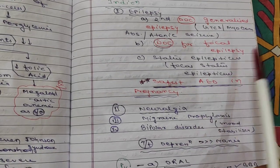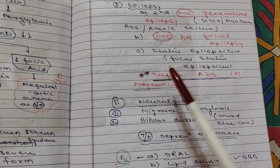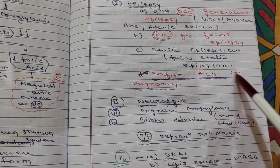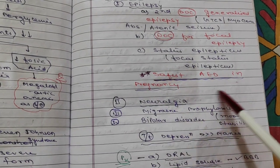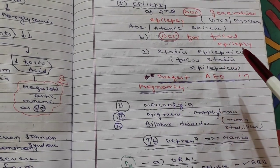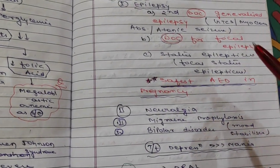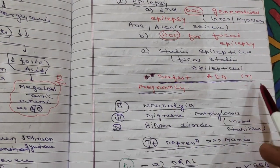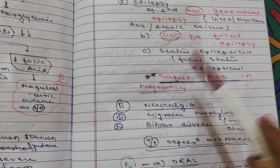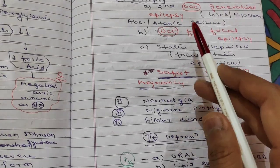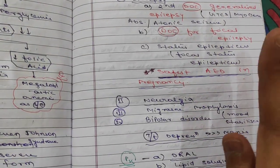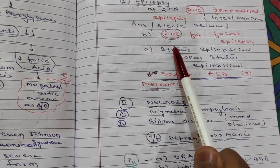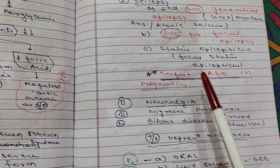Lamotrigine is also used for treatment of status epilepticus. Most importantly, lamotrigine is the safest anti-epileptic drug in pregnancy — this is a very important MCQ point. So for epilepsy, remember three key points: second drug of choice for generalized epilepsy, drug of choice for focal epilepsy, and the safest anti-epileptic drug in pregnancy.